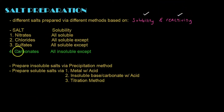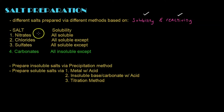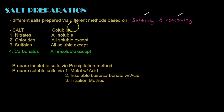These are the four groups that you have to memorize: nitrates, chlorides, sulfates, and carbonates. Let's start with the first one — all nitrates are soluble. Just remember that all nitrates are soluble.